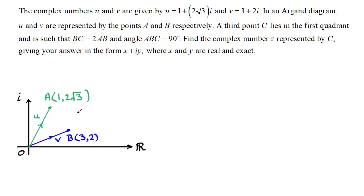Okay, so we need to put on our point c. We know that the point c lies in the first quadrant here in such a way that bc is twice the length of ab and angle abc is 90 degrees. Well it's going to look something like this.